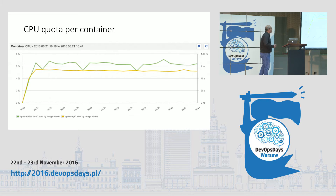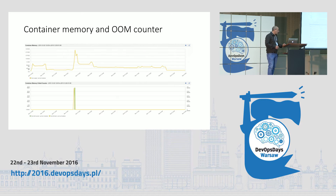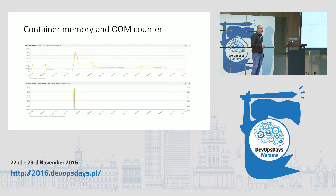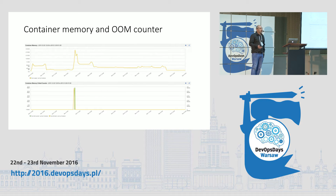Similarly, you can work with memory limits. Interesting information from the Docker API includes out-of-memory and memory fail counters — this means your application is trying to allocate memory that's not available because of a defined limit. A typical case is you give your container one gigabyte of memory, then run Elasticsearch in it and it tries to allocate one and a half gigabytes. You have to tune the application itself to the limits placed on the container — for example, setting the JVM heap size so Elasticsearch is aware it can use only one gigabyte.